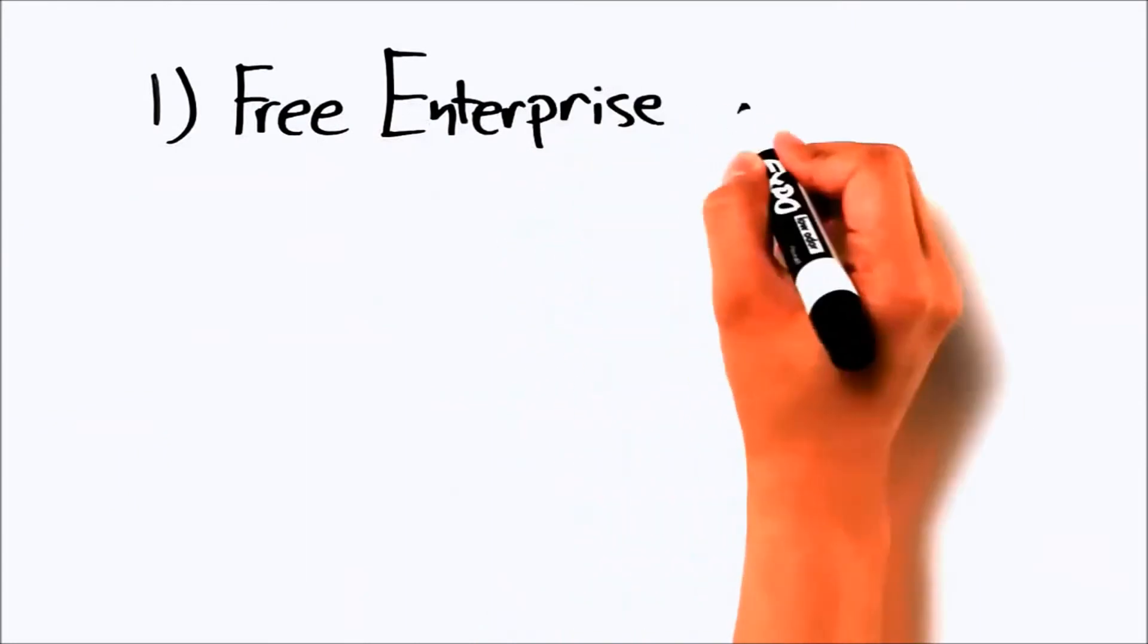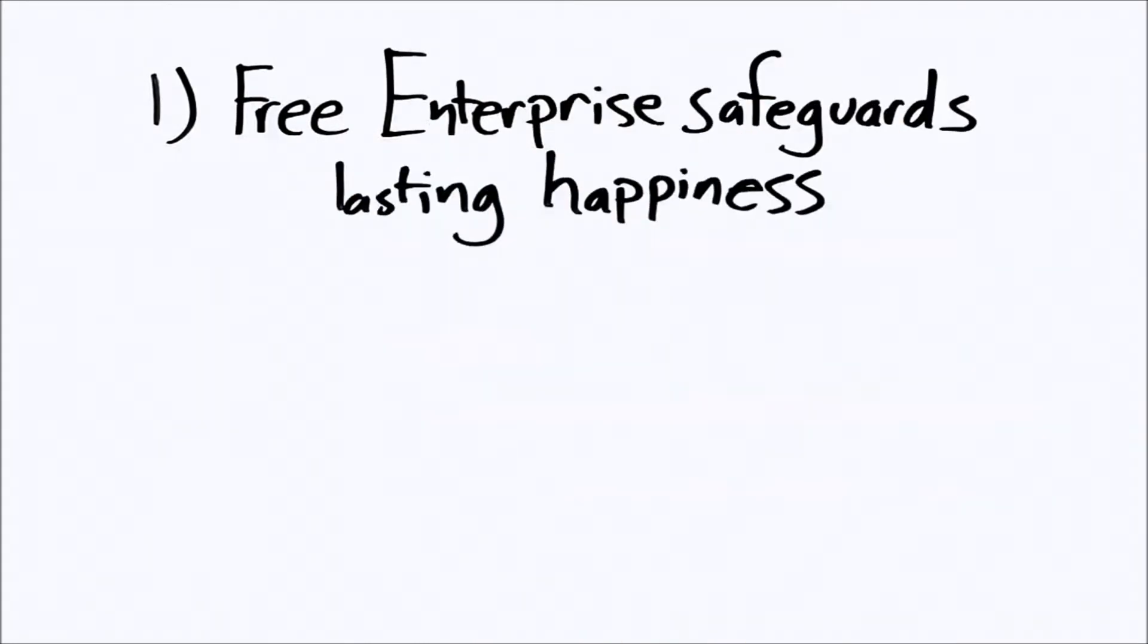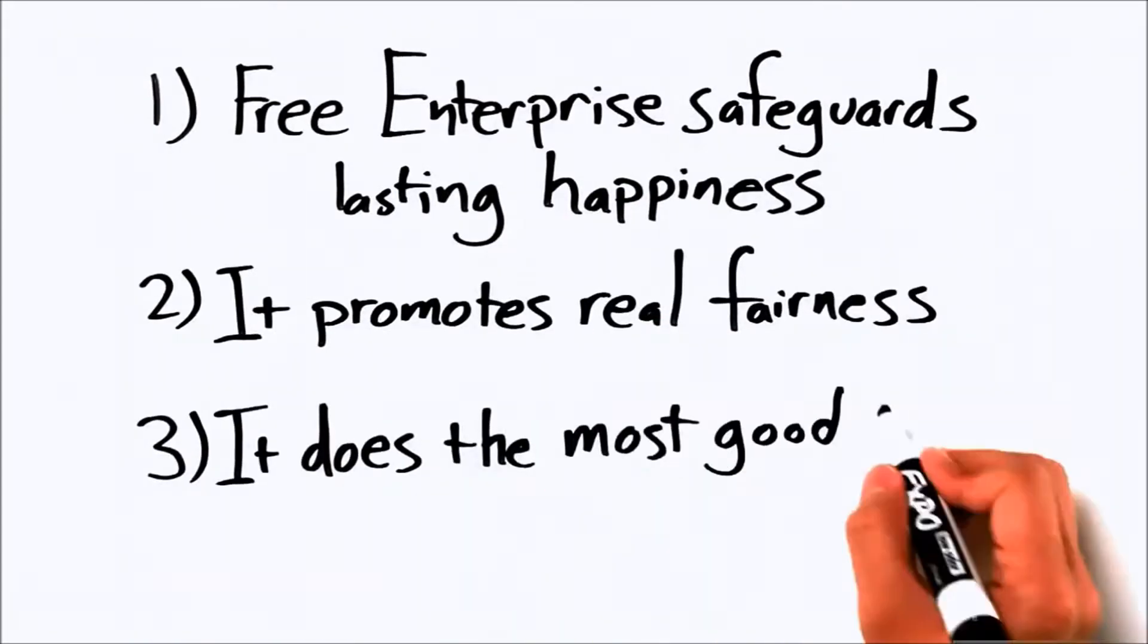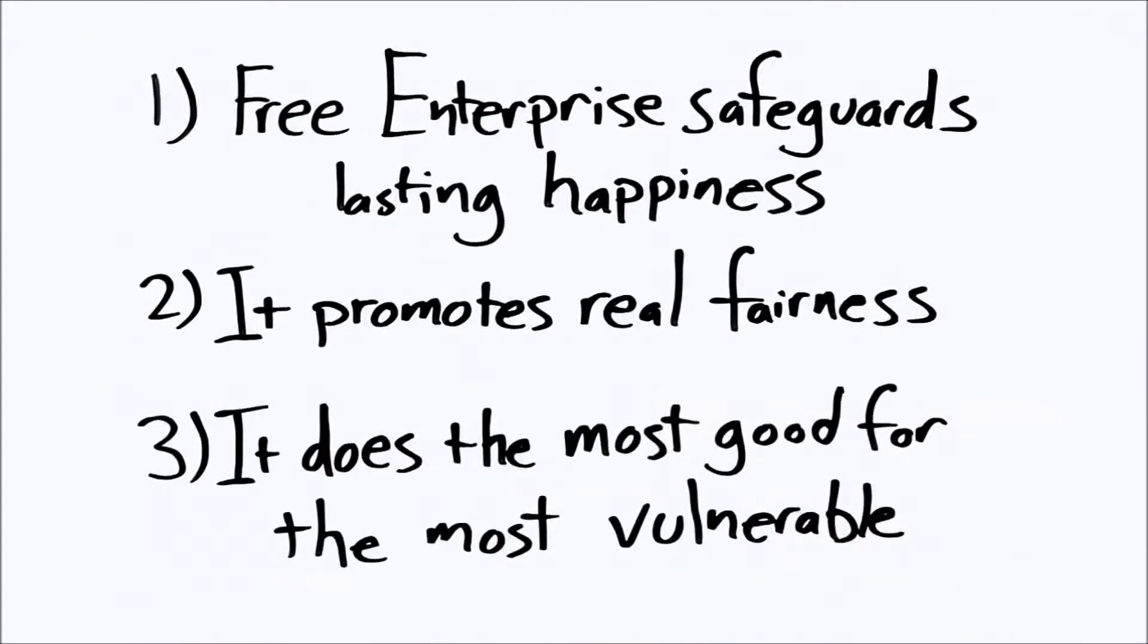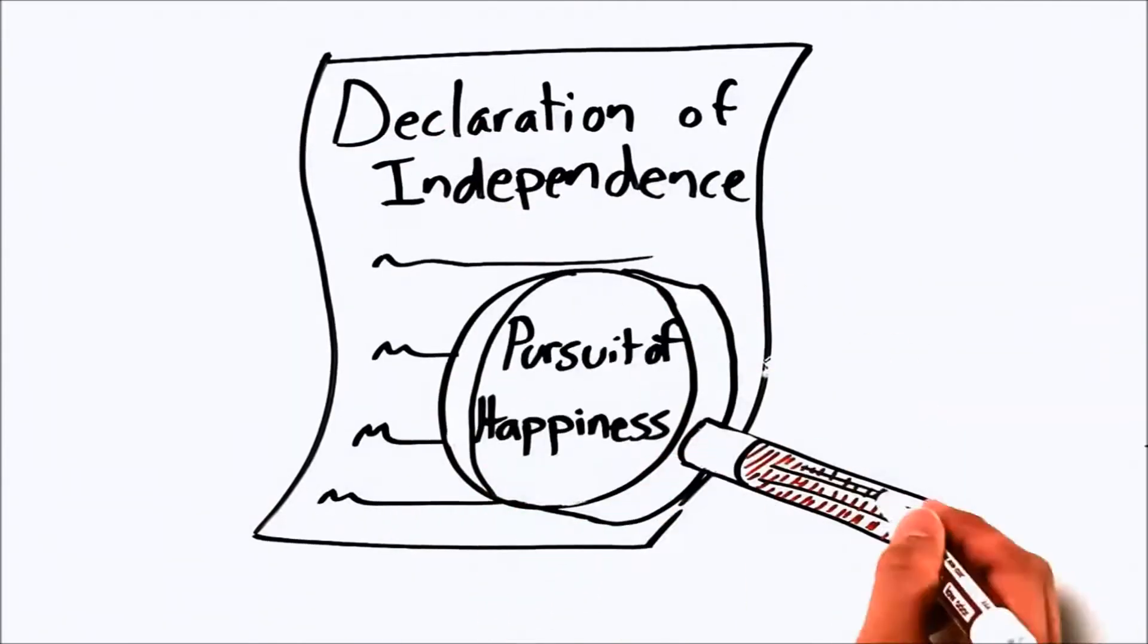And it's actually pretty easy to do. The moral case has three key points. First, free enterprise safeguards lasting happiness. Second, it promotes real fairness. And third, it does the most good for the most vulnerable. To start, we have to get clear on what America's founders meant by the pursuit of happiness.